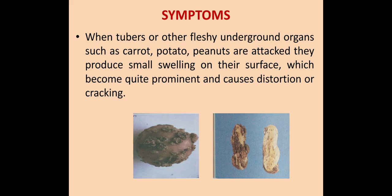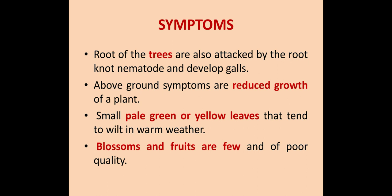Roots of trees are also attacked by the root knot nematode and they develop gall. Other symptoms include reduced growth of plants, small pale green or yellow leaves that tend to wilt in warm weather. Blossoms and fruits are few and they are of poor quality.